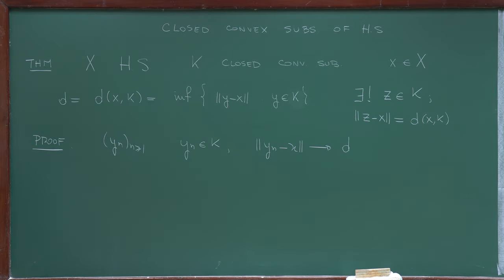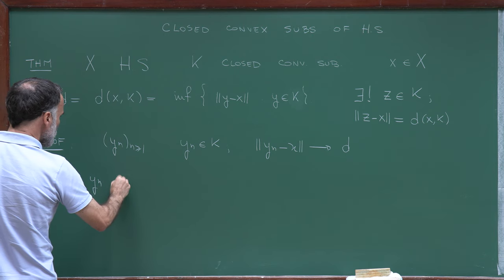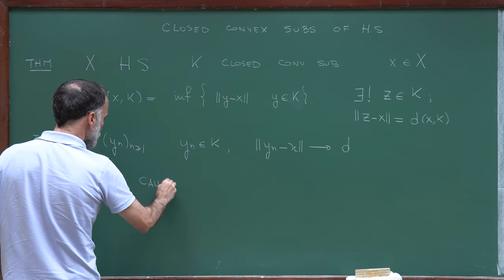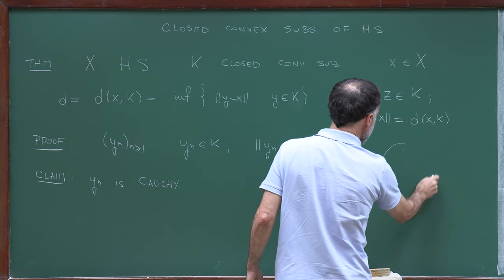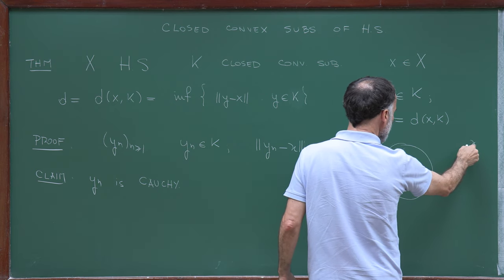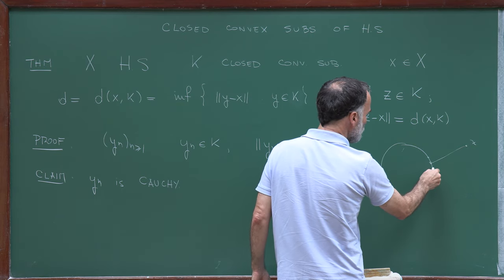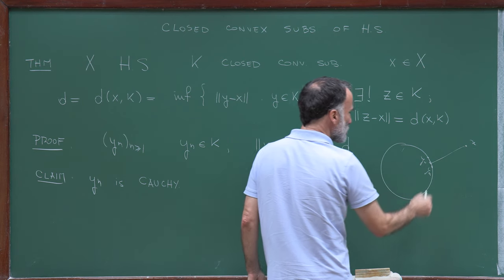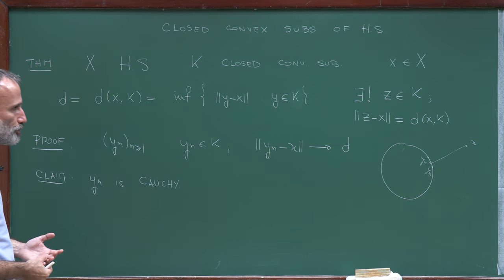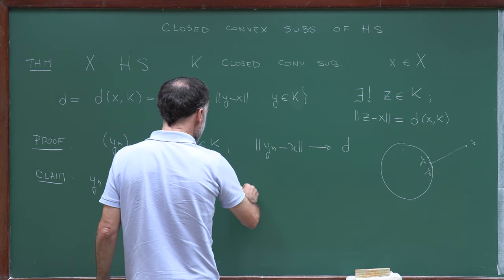Let me take a sequence Yn in K such that the norm of Yn minus X converges to the infimum, and let me call this infimum simply D. What I want to claim is that this sequence Yn is a Cauchy sequence. The idea is: you have your convex set K and a point X, and you're taking a sequence Yn approaching the minimal distance. It's reasonable to think that Yn is Cauchy.